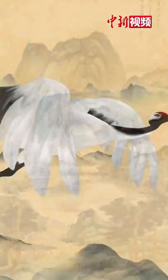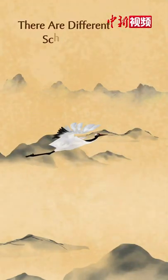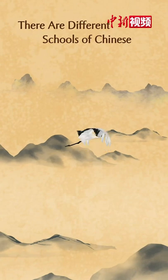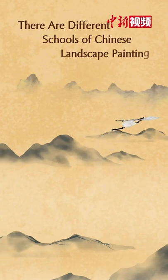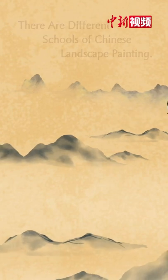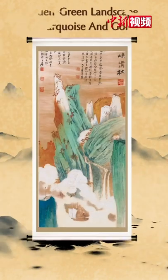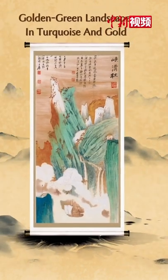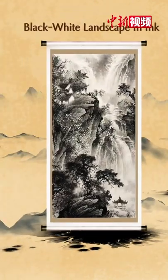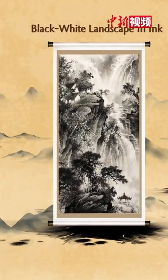There are different schools of Chinese landscape painting. It can be divided into blue-green style, golden-green landscape, black-white landscape, and so on.